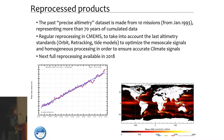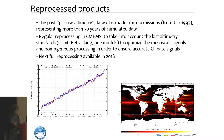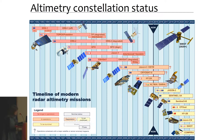The reprocessed dataset runs from January 1993. We perform reprocessing approximately every four years to incorporate new research on data quality and corrections, reprocessing the entire dataset from 1993 each time. This ensures the dataset is fully and completely homogeneous in processing and quality. The next reprocessing is planned for 2019.